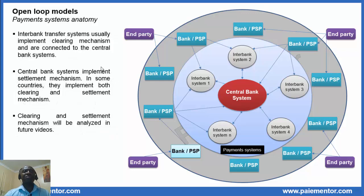Interbank transfer systems usually implement clearing mechanisms and are connected to the central bank systems for the settlement of funds. Clearing mechanisms allow exchanging payment instructions without fund transfer and perform an offset or netting of obligations according to a defined frequency — in general one or several times a day. Central bank systems implement settlement mechanisms, which consist in the actual movement of funds between banks' accounts. In some countries, the central bank systems may implement both clearing and settlement mechanisms. These two key concepts in payments will be analyzed in detail in a future video.